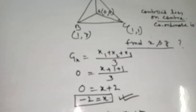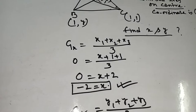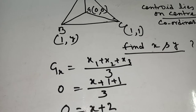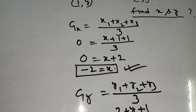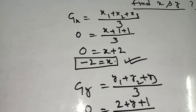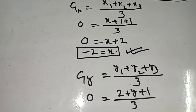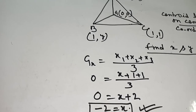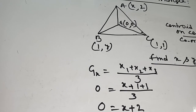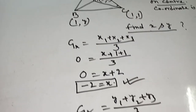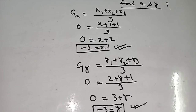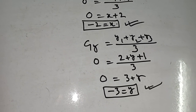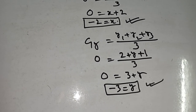This is the answer. When the value of the centroid is given, you can easily find the unknown coordinate of the triangle. Here, A is given as (x, 2), B is (1, y), and C is (1, 1), with the centroid at (0, 0). Using the formula of centroid, the value of x = −2 and y = −3. This is the answer.